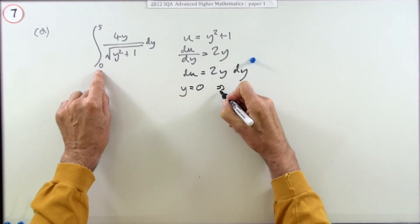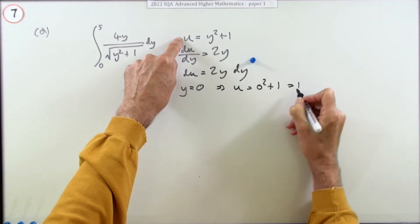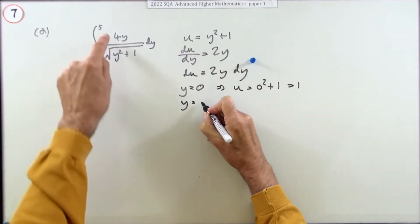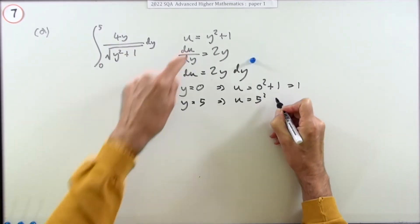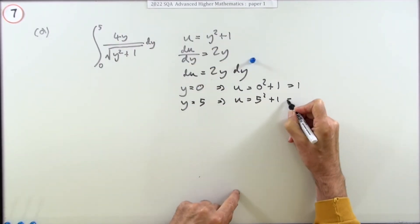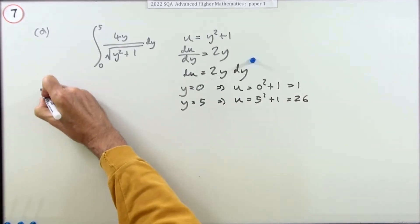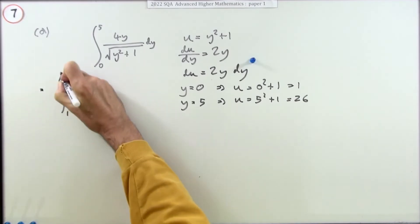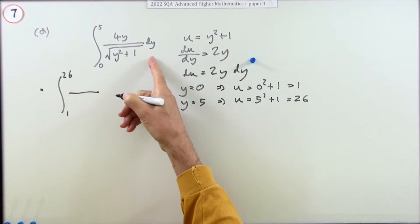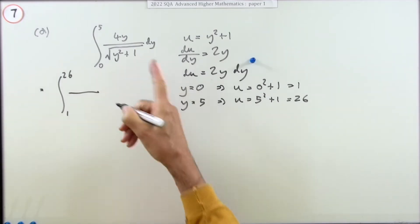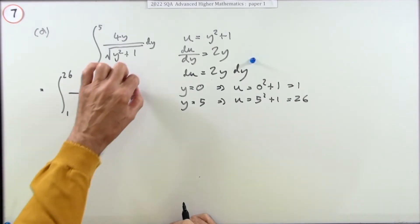When y is 0 (the lower limit), u is 0 squared plus 1, which is 1. When y is 5 (the upper limit), u is 5 squared plus 1, which is 26. Now we're ready: the integral runs from 1 to 26 in terms of u, and changing to du earns the next mark.